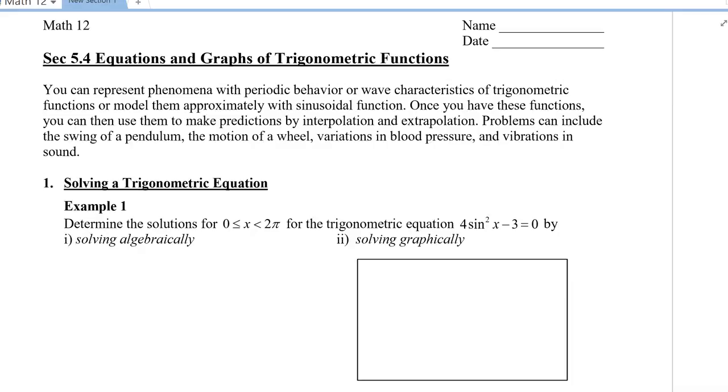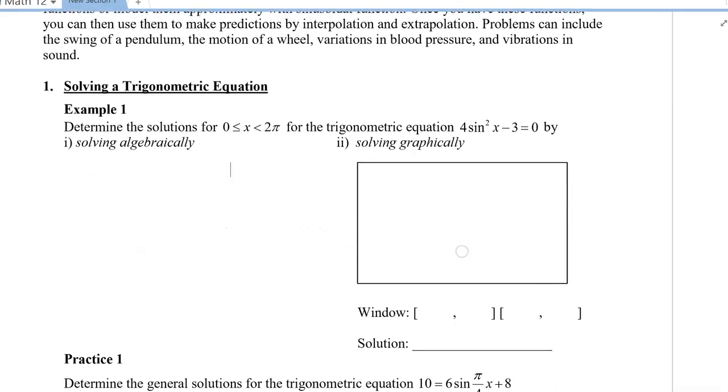To start off, let's take a look at 4 sine squared x minus 3. We're going to solve this algebraically first. To solve, I need to isolate my sine squared x first. Once I've isolated sine squared x, I need to isolate sine x. I'm going to square root both sides, so don't forget the plus or minus on the right side. And I get root 3 divided by 2.